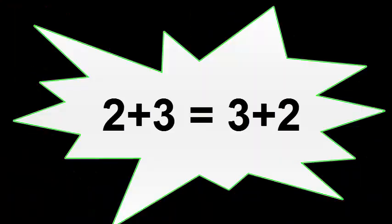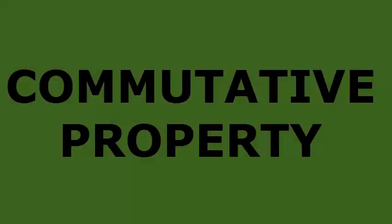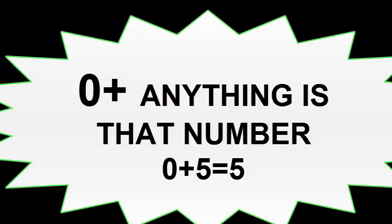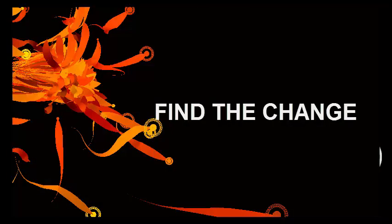2 plus 3 equals 3 plus 2 — commutative property. 0 plus anything is that number — identity property. 1 plus anything.